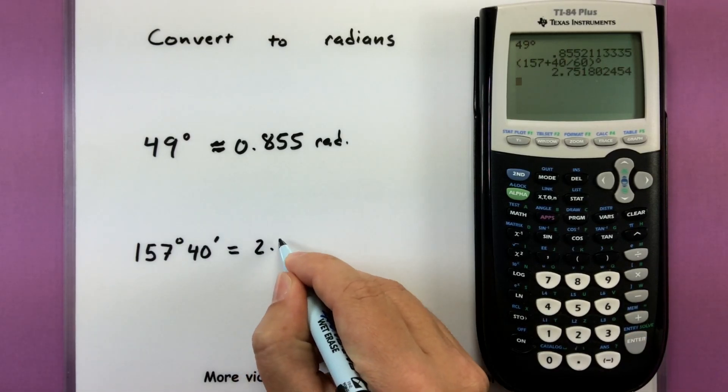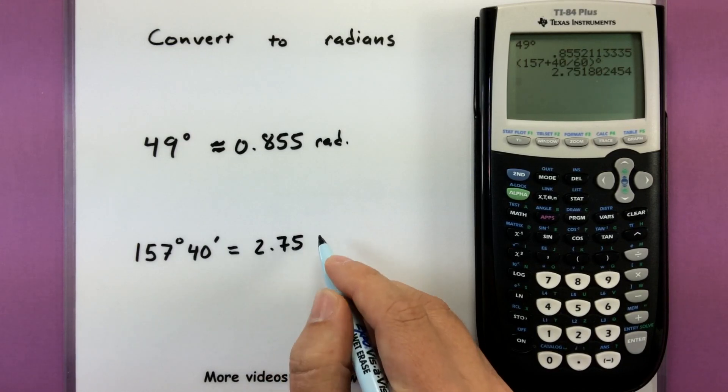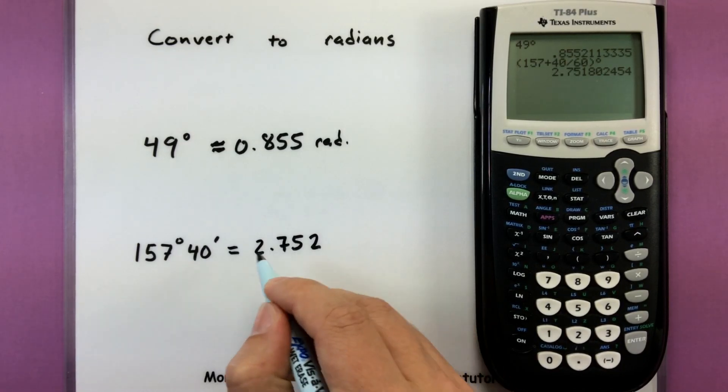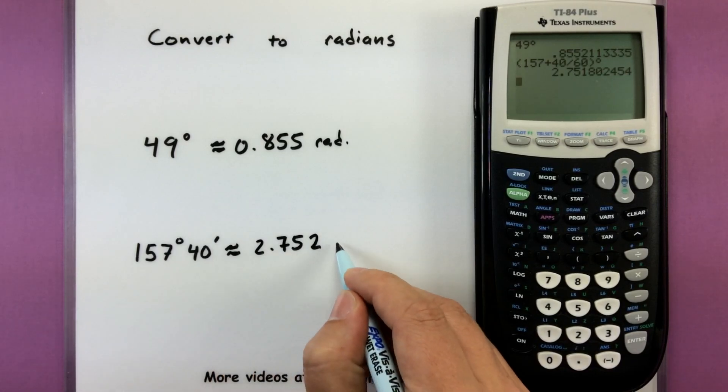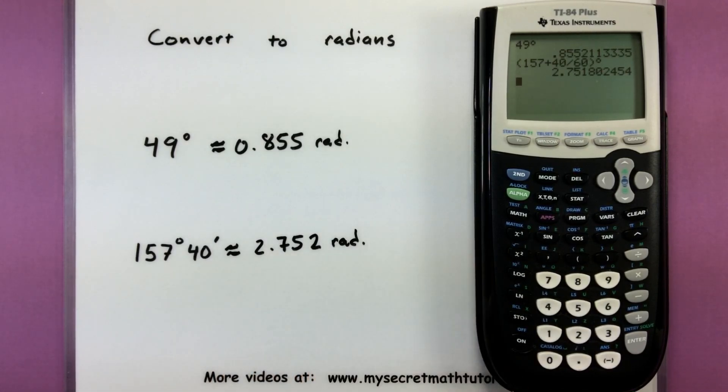So 2.75. Let's go ahead and round that 2.75 radians. Okay. Not a bad process.